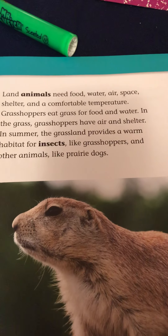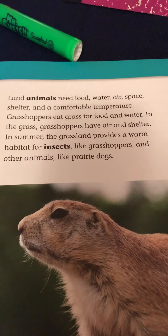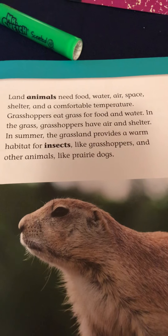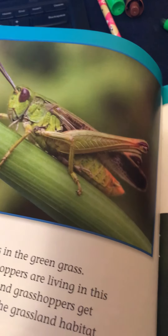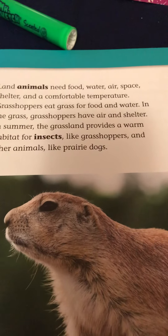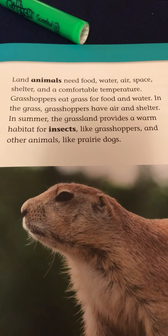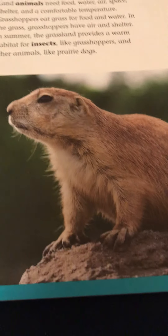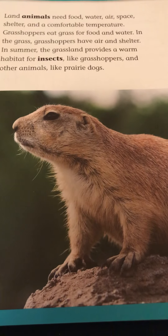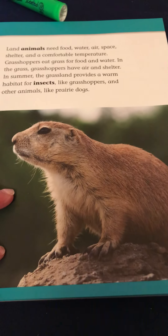Grasshoppers eat grass for food and get their water from the grass. In the grass, grasshoppers have air and shelter, and they can camouflage well in the grass too. In summer, the grassland provides a warm habitat for insects like grasshoppers and other animals like prairie dogs. So cute! There are a lot of prairie dogs in Minnesota, aren't there?